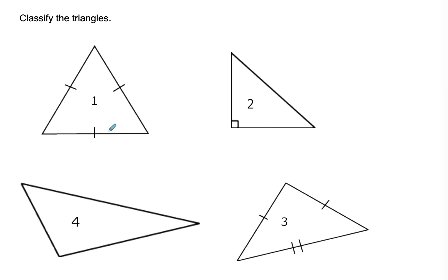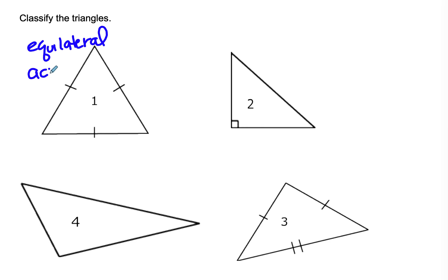We need to classify these triangles using two names. Number one: three equal sides means it's equilateral, and all angles are less than 90 degrees so it's acute — you could also say equiangular, meaning the angles are acute and equal. Number two is harder to read since nothing is marked, so I'll assume the sides are not actually equal, making it scalene and right because there's a right angle.